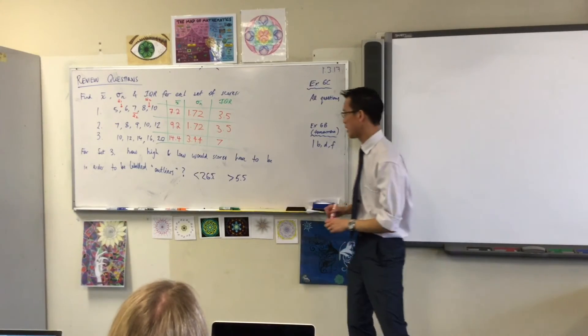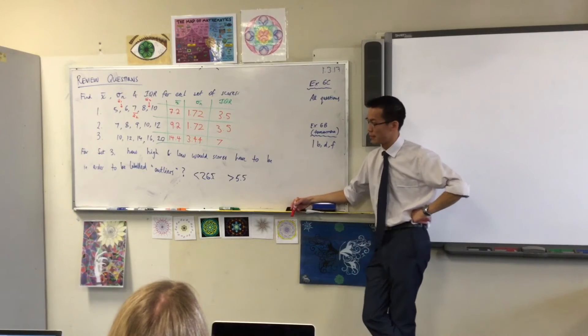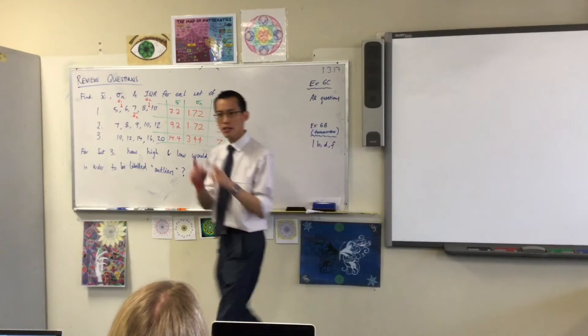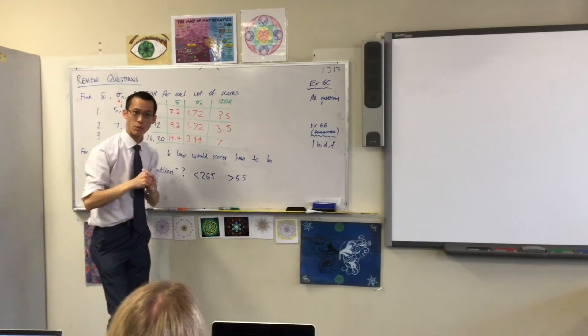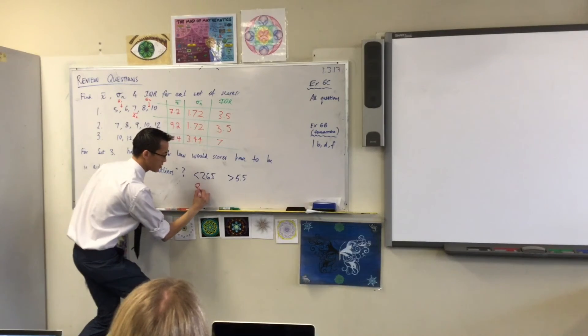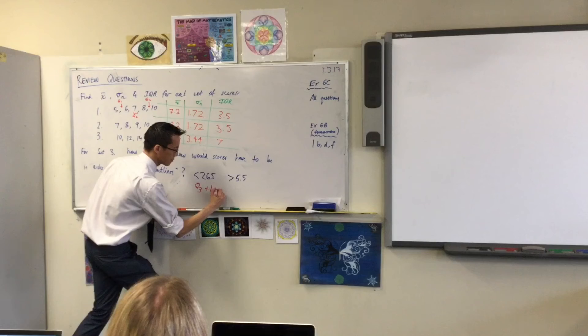Last one, just down the bottom here: how high or low would scores have to be in order to be labeled outliers? Does anyone remember? Let's just do this one first. How do you get high outliers? How do we work that out? The Q3, or Q upper. Yeah, you start with the upper quartile. What do you do with that? Plus 1.5 times the interquartile range.